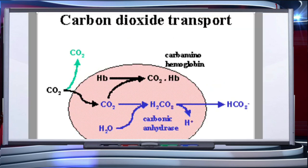Carbon dioxide is carried by hemoglobin as carbaminohemoglobin, about 20 to 25 percent. This binding is related to the partial pressure of carbon dioxide, and partial pressure of oxygen is a major factor which could affect this binding. When partial pressure of carbon dioxide is higher and partial pressure of oxygen is low, as in the tissues, more binding of carbon dioxide occurs. Whereas when partial pressure of carbon dioxide is low and partial pressure of oxygen is high, as in the alveoli, dissociation of carbon dioxide from carbaminohemoglobin takes place.